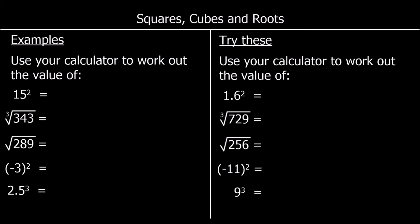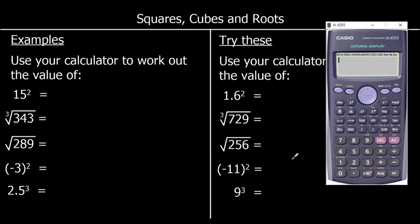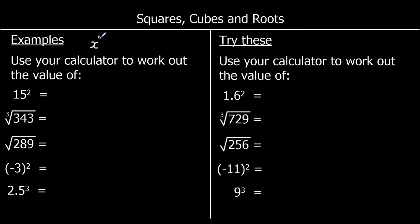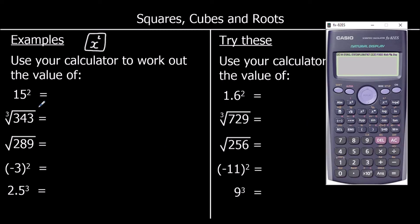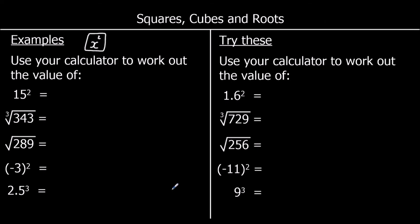Now we're going to look at using a calculator to do powers and roots — squares, cubes, and roots. The first question is 15 squared. On the calculator you should find a squared button, which looks like x². Type 15, then press the squared button, then press equals, and we get the answer 225. So 15 squared is 225.